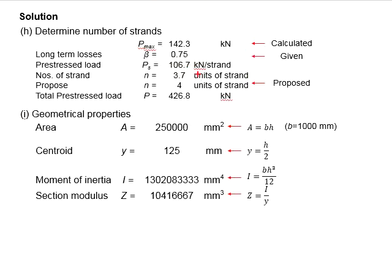In this case, we will propose 4 units of strand. The effective prestressing load within the strand will be slightly less than this. However, our intention is to fully utilize the prestressing load. Therefore, multiplied by 4, the total prestressing load will be 426.8 kilonewtons. This number will be used for the following calculation.